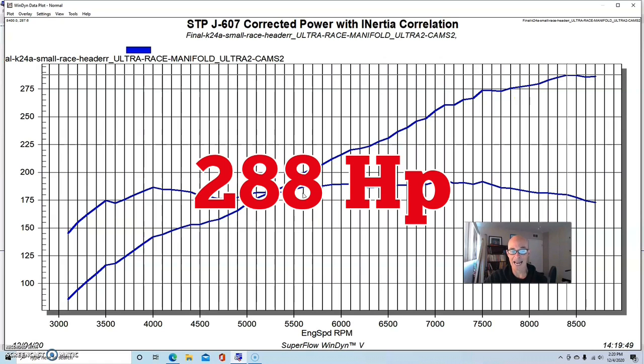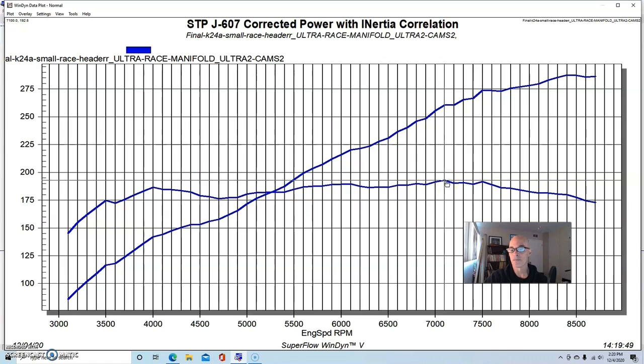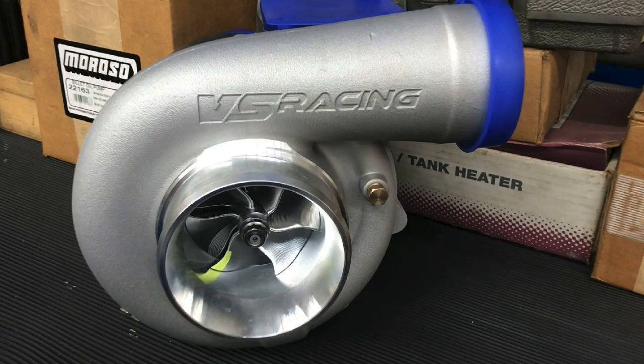This is the configuration for the NA motor. Run with those Skunk2 stage 2 cams, this thing produced 288 horsepower and 193 foot-pounds of torque naturally aspirated. Obviously we dialed in the air-fuel ratio and both the cam timing and ignition timing - we played with both until we got an optimized combination.